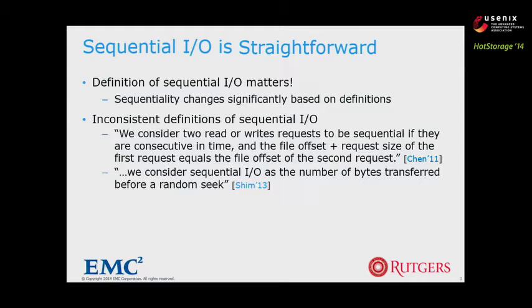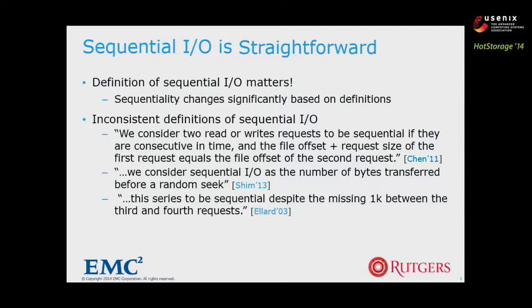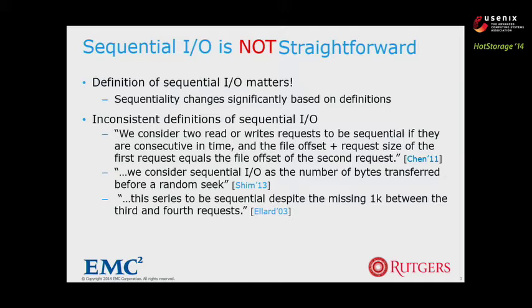The third example is from a FAST paper. It considers a series to be sequential despite a missing 1K between the third and the fourth request — meaning that small gaps can still be considered sequential. This is a variant of the first example. From this example and our survey, the concept of sequential I/O is not straightforward at all; it can be defined in many different ways. We found sequentiality is heavily used but rarely defined, and defined in an inconsistent way. We argue that sequentiality should be defined, and system researchers should state which definition they use.